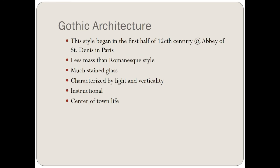Gothic architecture began in the first half of the 12th century at the Abbey Church of Saint Denis in Paris. Gothic structures tended to have less mass than the Romanesque style. They had a lot of stained glass and were characterized by light and verticality. The decorations — like the Romanesque exteriors — were instructional, including stained glass windows as well as exterior and interior sculptures.